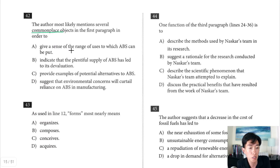Choice A. Give a sense of the range of uses to which ABS can be put. Yes, definitely. Choice B. Indicate the plentiful supply of ABS has led to its devaluation. Nothing at all mentioned about the supply of ABS. Also nothing about its devaluation. They do talk about one disadvantage though. Choice C. Provide examples of potential alternatives to ABS. Those are things that are made of ABS. So they're not alternatives to ABS. Choice D. Suggests that environmental concerns will curtail reliance on ABS in manufacturing. Whether or not that's true remains to be seen, but that's not why they list all that stuff. They list all that stuff just to show how widespread and how useful it is. So choice D is out. And the best answer is A.